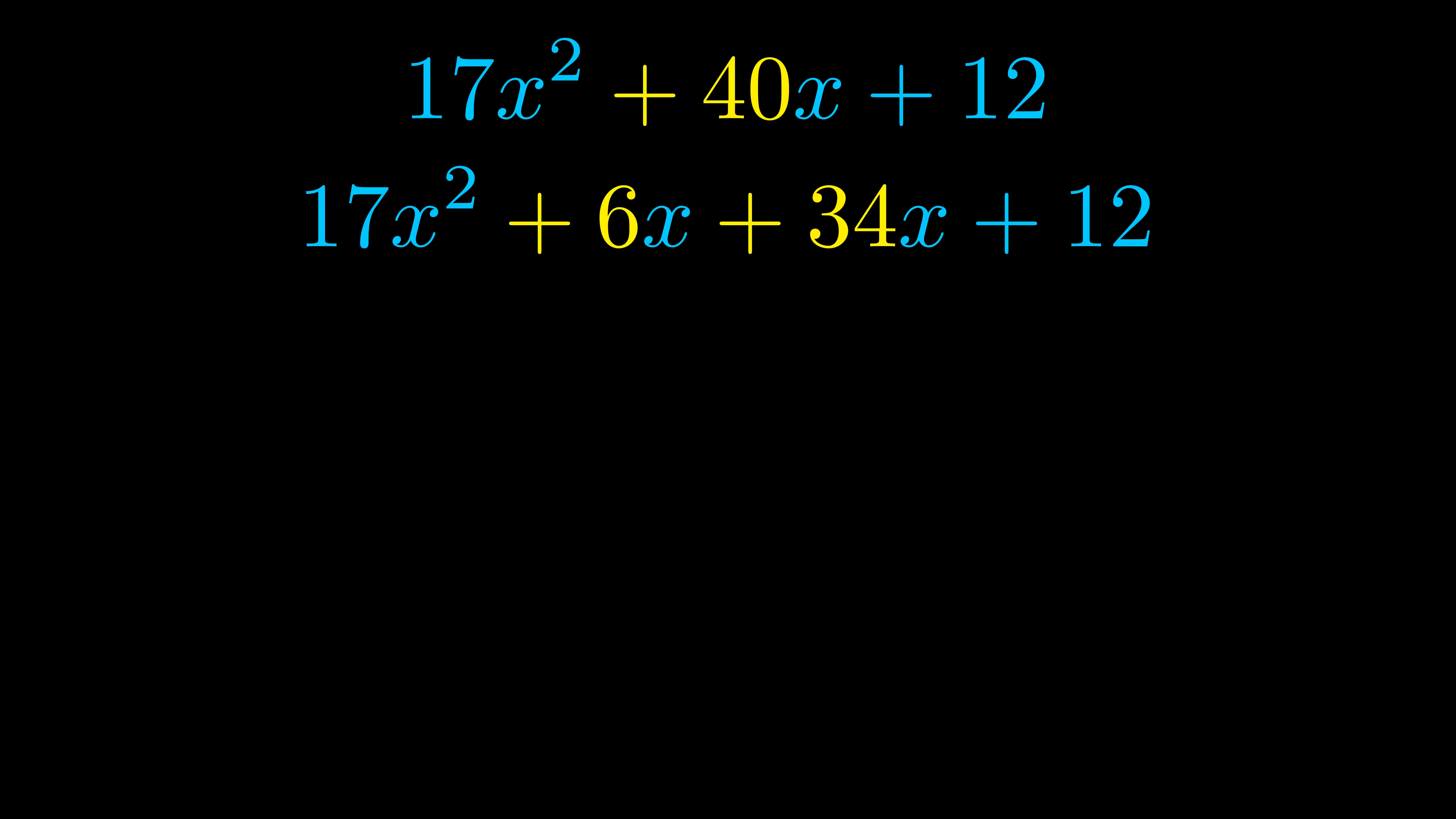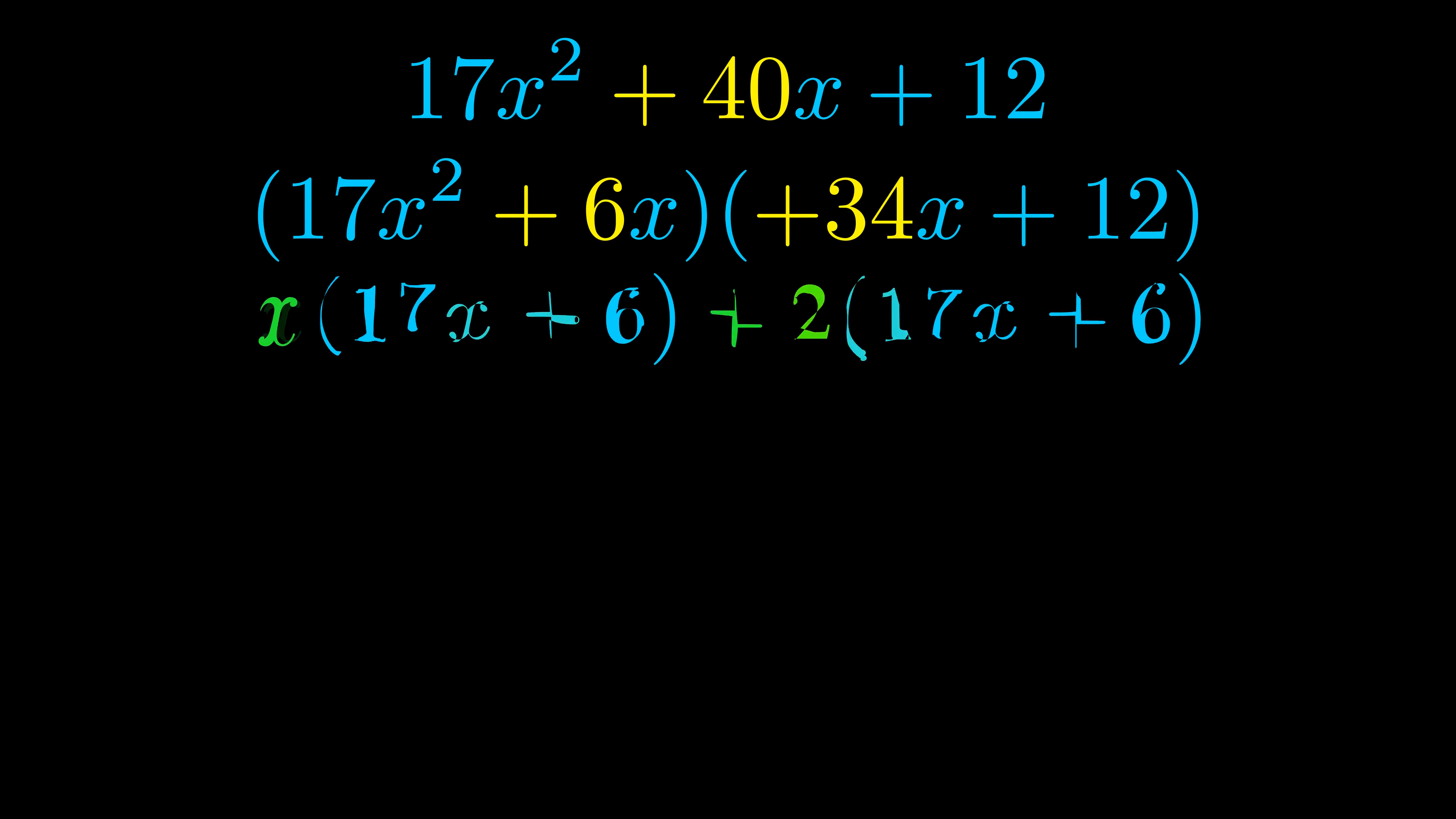Once we've done this we go ahead and we put parentheses around the first term and the last term. And we do that so that we can take the greatest common factor out of both terms. We can see the greatest common factor is now outside in green.